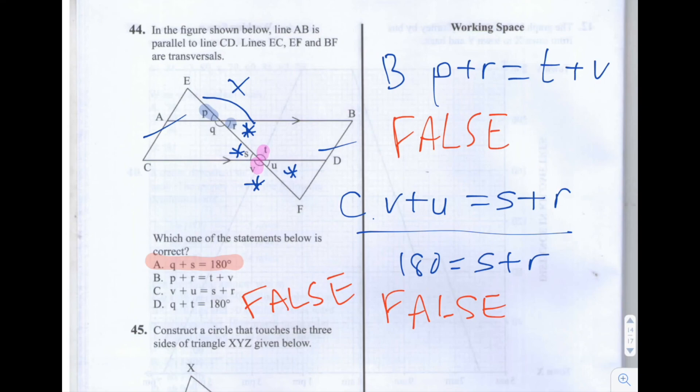So we worked out, through a process of elimination that the answer to question 44 is A, Q plus S is equal to 180.